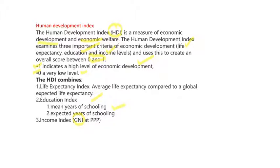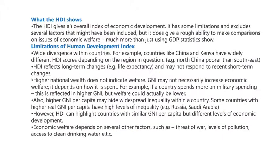HDI is calculated using GNI, mean years of schooling, and then we use the geometric mean to compute the Human Development Index. HDI gives an overall index of economic development as well as economic welfare, but it has some limitations and excludes several factors.